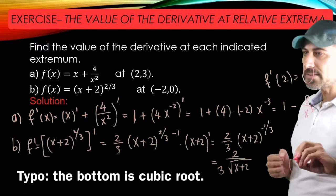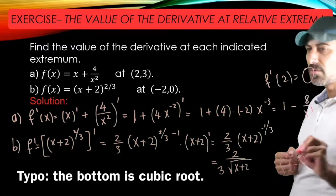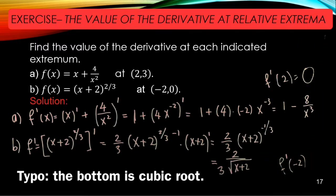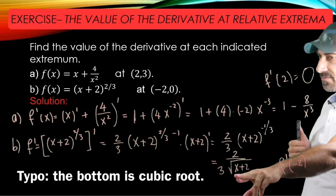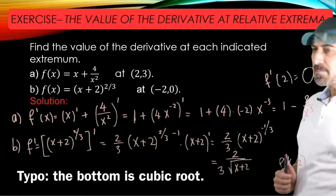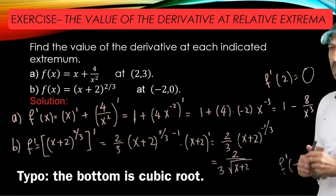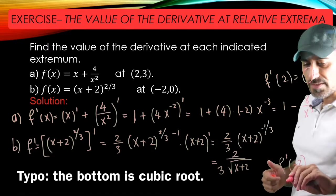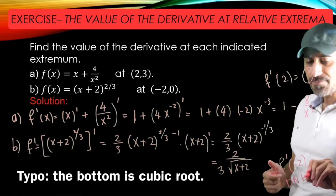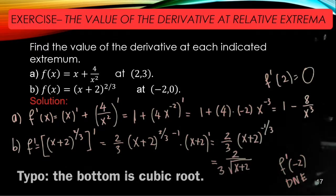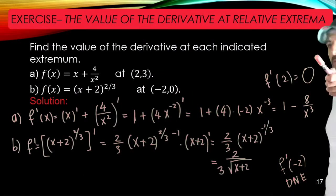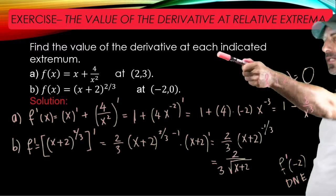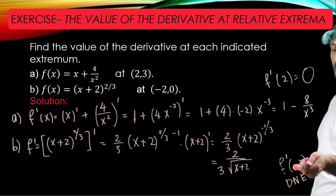Unfortunately, at negative 2, this function is not defined because the bottom becomes 0, so you're dividing by 0. This doesn't exist. In other words, f prime at negative 2 does not exist. So in one case f prime becomes 0 at the given point; in the other case f prime is not defined.